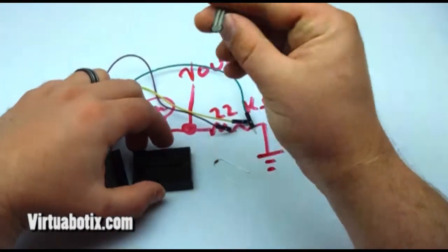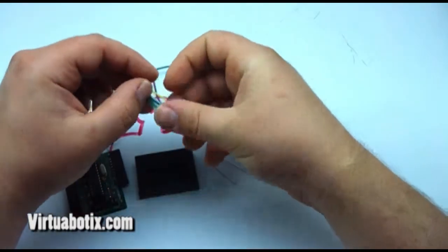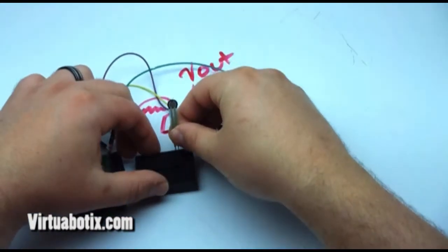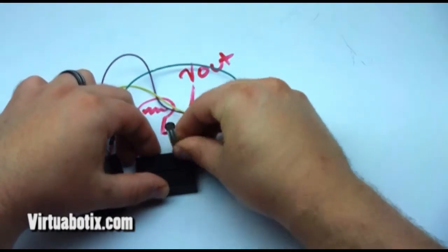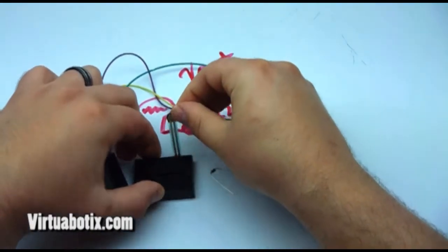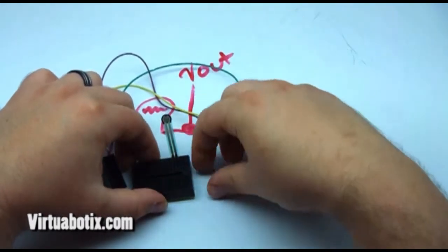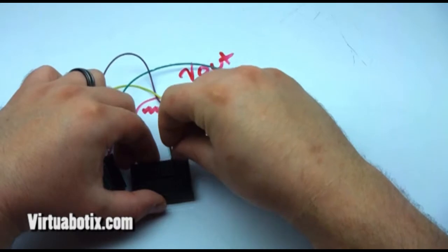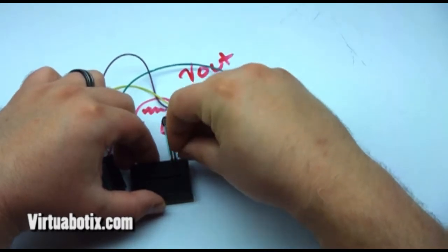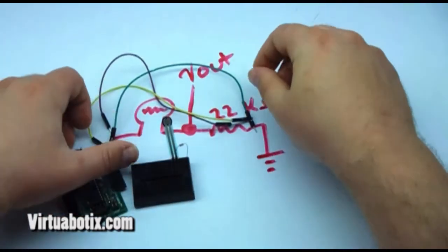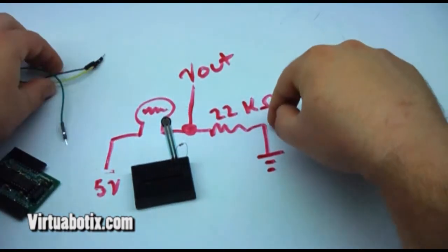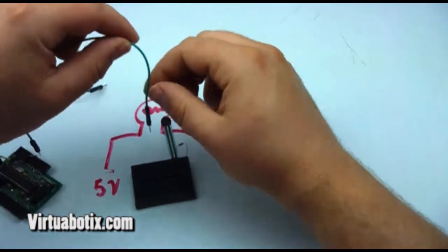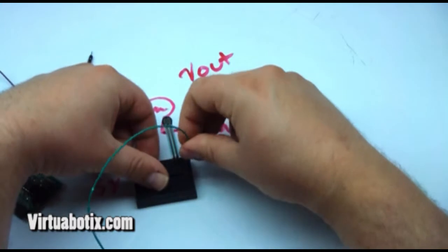So first let's go ahead and set up this circuit. So I'm going to put right here. So we got that plugged in there. Going to put our resistor right here. And according to this we want our ground on this side. So we'll put it right here.